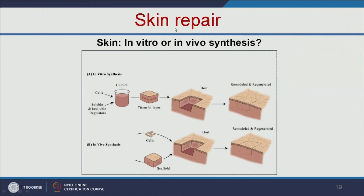There are two approaches to repair skin: in vitro and in vivo. In the in vitro approach, you add cells and other regulators to the tissue bilayer and implant it into the host. In the in vivo synthesis, you put the scaffold into the host, add the cells, and it regenerates inside the host. That is called in vivo synthesis.